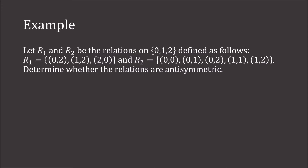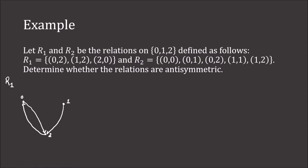When dealing with finite relations on a finite set, it is easiest to look at the directed graph of the relation. Looking at the directed graph of R1, we have three points: 0, 1, and 2. For R1, 0 goes to 2, 1 goes to 2, and 2 goes back to 0. Since 0 and 2 are distinct elements and each relates back to the other, R1 cannot be anti-symmetric.